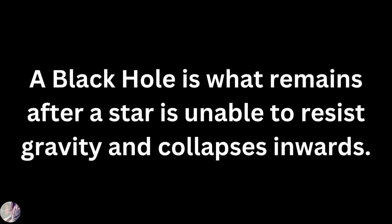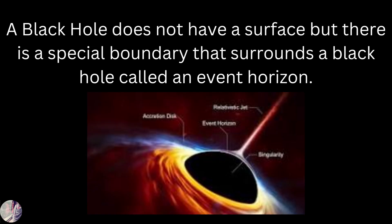A black hole is what remains after a star is unable to resist gravity and collapses inwards. A black hole does not have a surface, but there is a special boundary that surrounds a black hole called an event horizon, as shown in this picture.